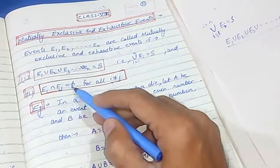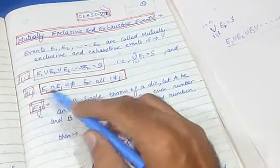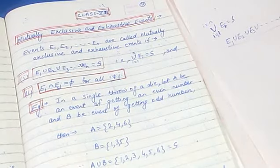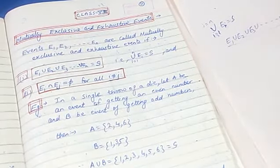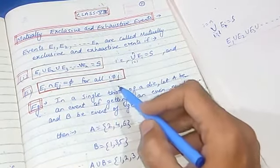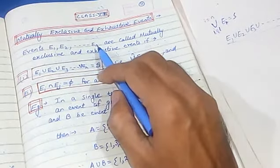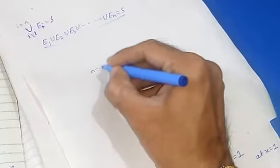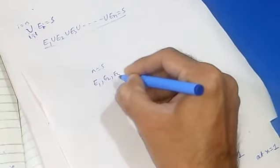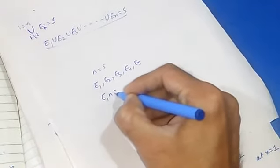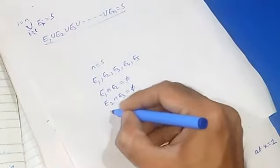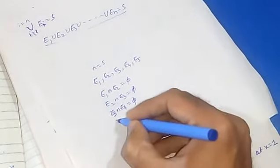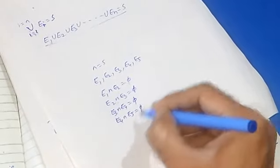The second condition is: EI intersection EJ equals the empty set, for all I not equal to J. This means for any two different events EI and EJ, their intersection must be the empty set. For example, if N equals 5, then E1 intersection E2, E2 intersection E3, E3 intersection E4, and E4 intersection E5 must all be empty sets.